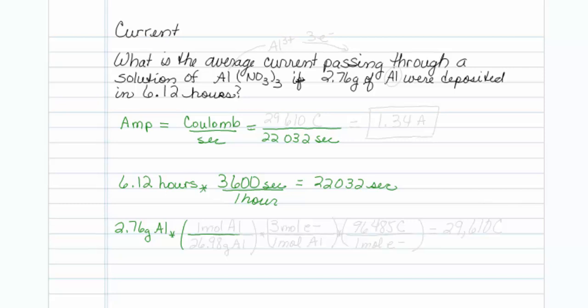In chemistry, whenever you have grams, it is always a good idea to get to moles. So how about if there are 26.98 grams of aluminum in one mole of aluminum.